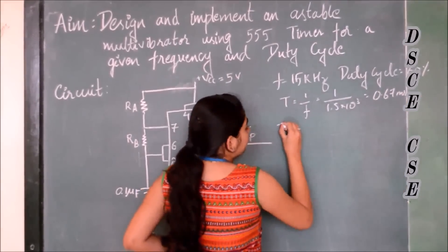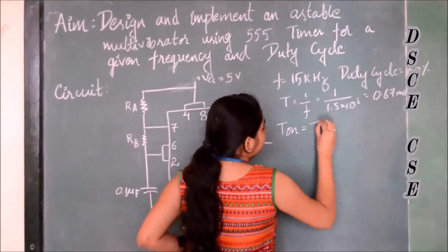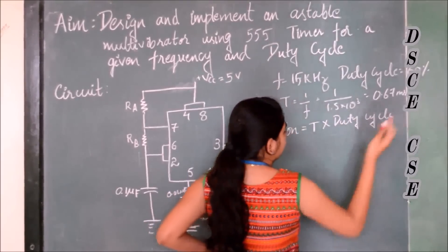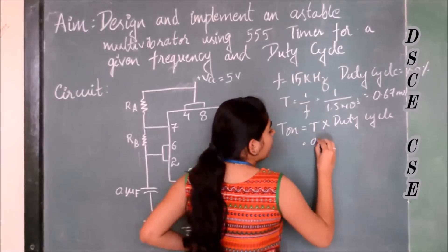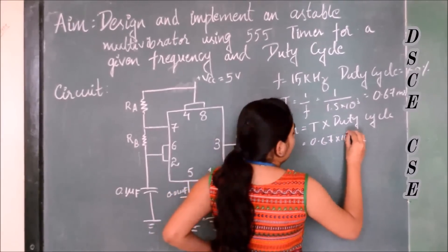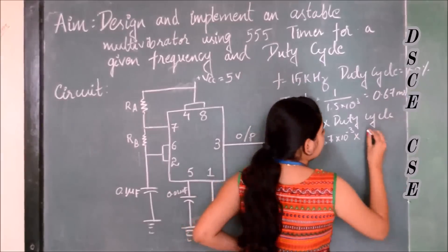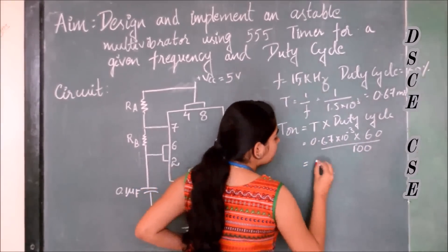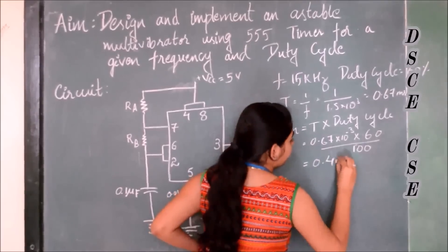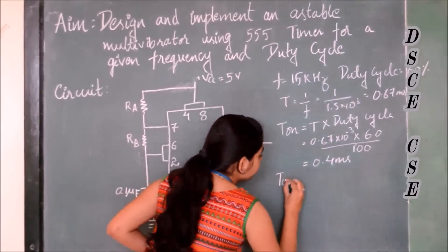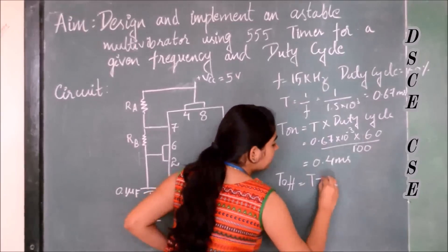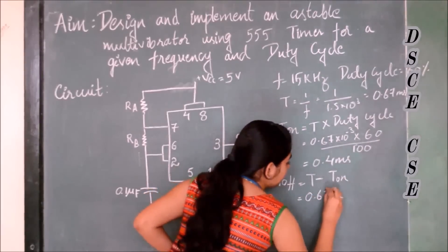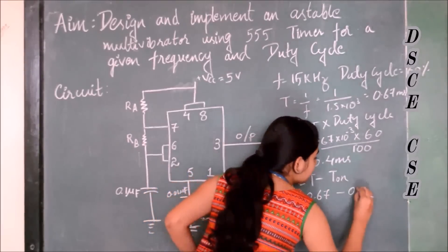So T_on is equal to time period into duty cycle, that is 0.67 into 10^-3 seconds into 60 percent. This will be equal to 0.4 millisecond and T_off will be equal to time period minus T_on.